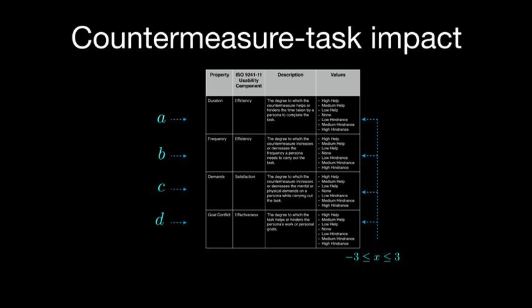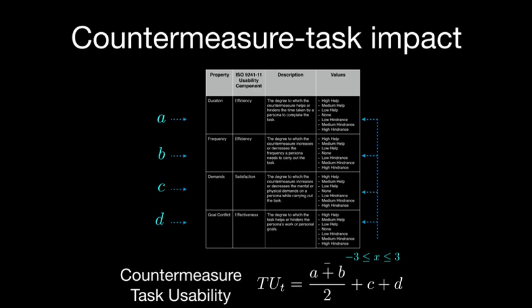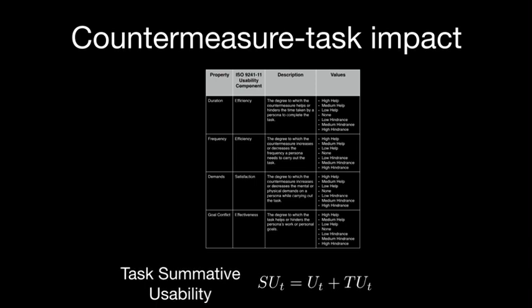Indicating the affected roles produces a list of related tasks. The affected role is instrument technicians; the persona Barry modifies PLC software, and that task is impacted by the countermeasure — a slight hindrance on duration, demands, and conflict with personal and organizational goals. This affects the usability score. Countermeasure usability values range from -3 (great help) to +3 (great hindrance), and the overall usability combines the base task usability with the countermeasure task usability.